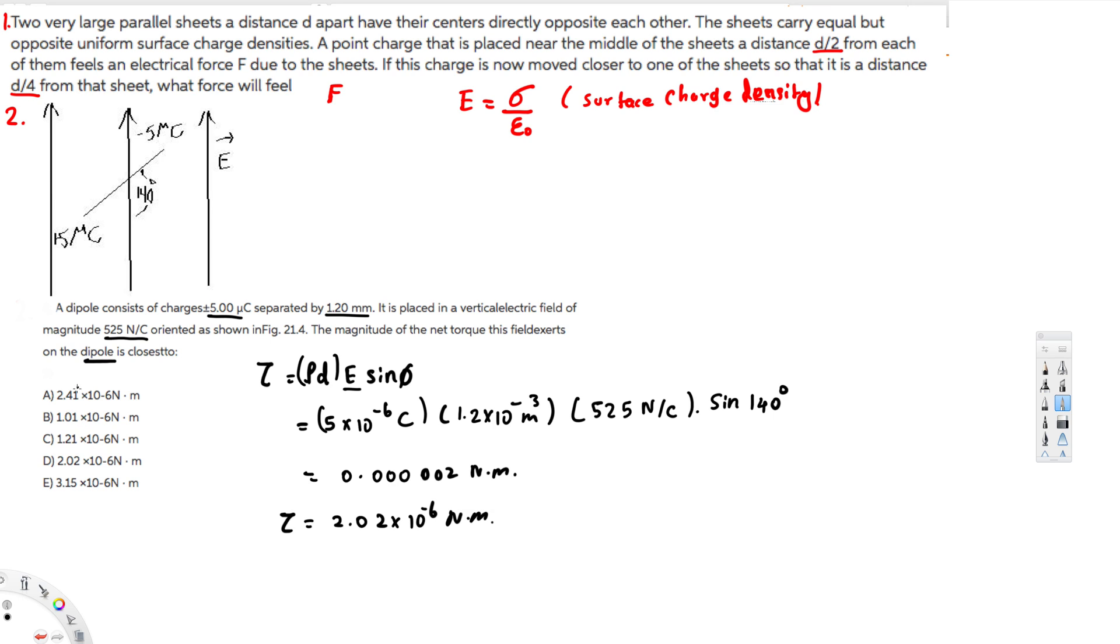Here, if you want to choose, this one matches with this answer. Therefore, the answer for this one is 2.02 times 10 to the power of minus 6 newton meters. And that's how we do these kind of problems. I hope you guys find this helpful. See you next time.